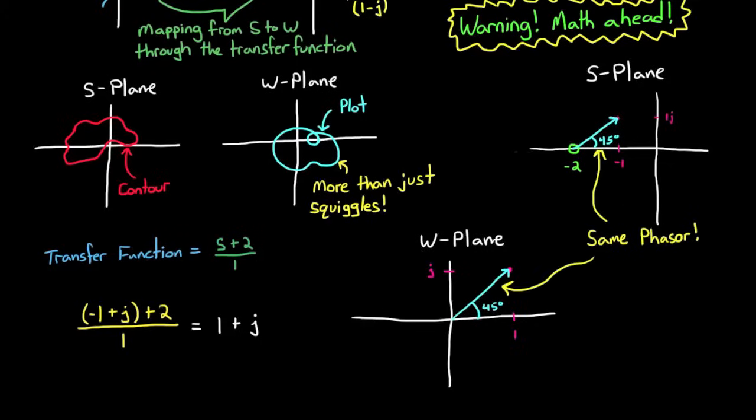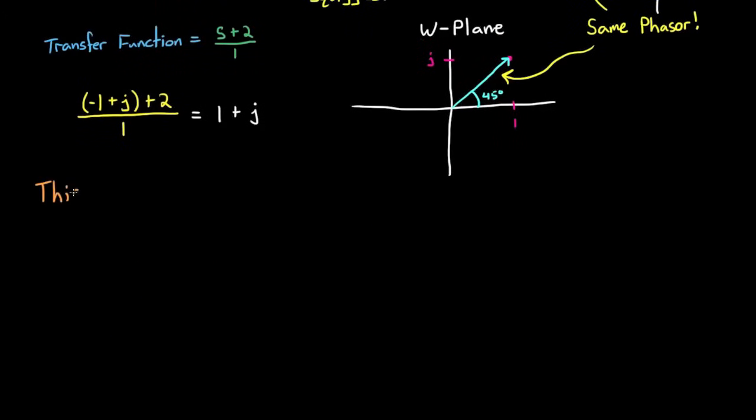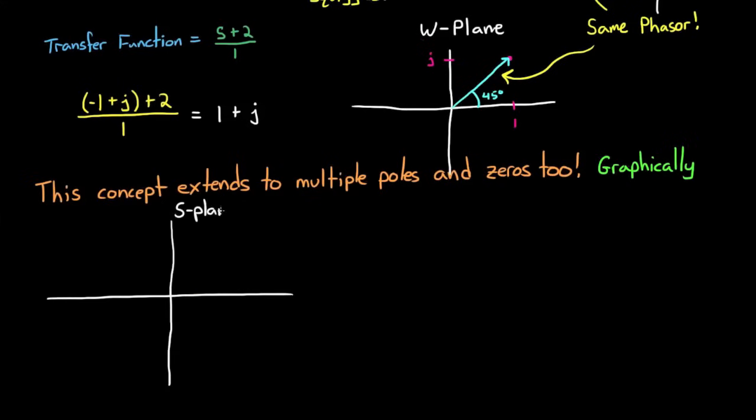And this concept extends to multiple poles and zeros as well. And what's nice is that you can figure out the mapping between the s-plane and the w-plane graphically. I'll show you how in this set of 3 poles and 2 zeros.